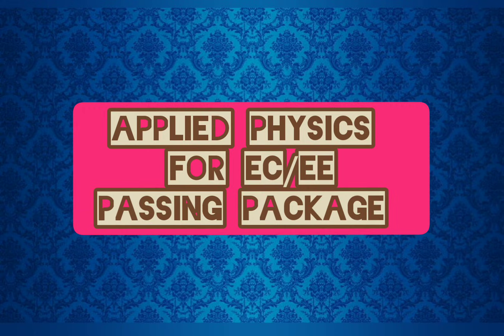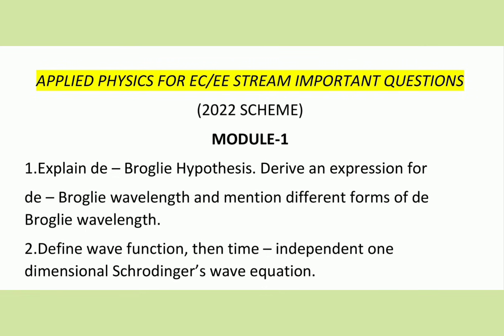First I go with first module. The first question is: explain de Broglie hypothesis, derive an expression for de Broglie wavelength and mention different forms of de Broglie wavelength.